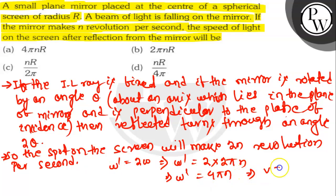So v will be omega dash into r. Therefore, v is equal to 4 pi n into r. Hence, the option number a is the correct answer. Thank you.